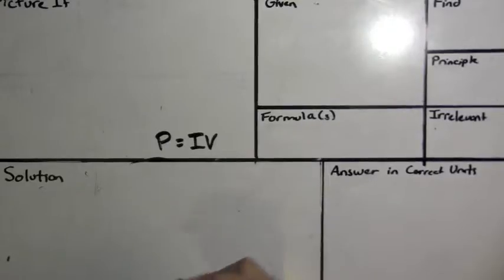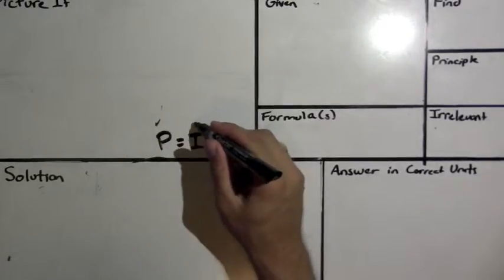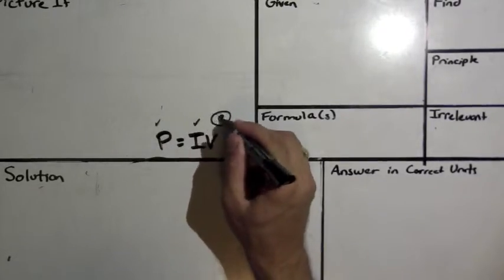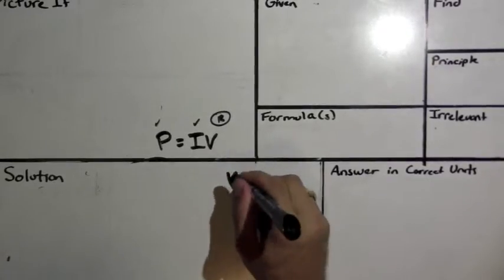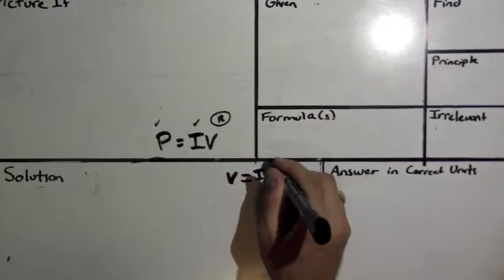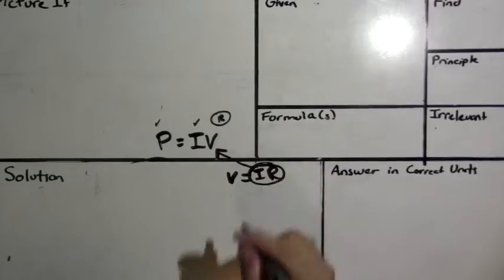We know that's not going to work because we're looking at constant electric power and then current and then we should have resistance here. So we know we have to change this up here so we're going to use the formula V equals IR and we're going to substitute that in here for what V is.